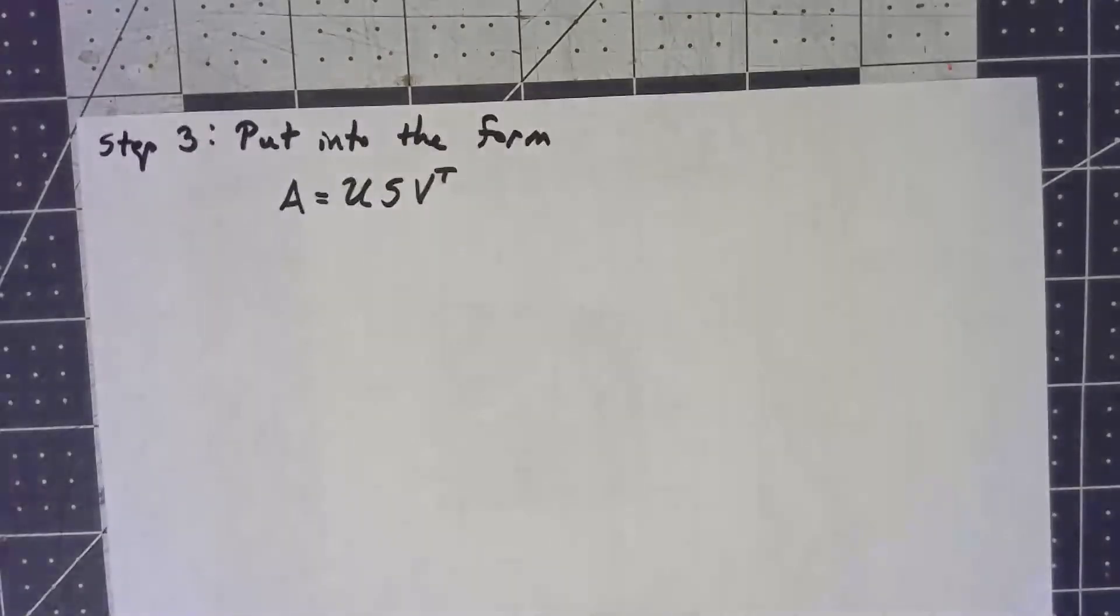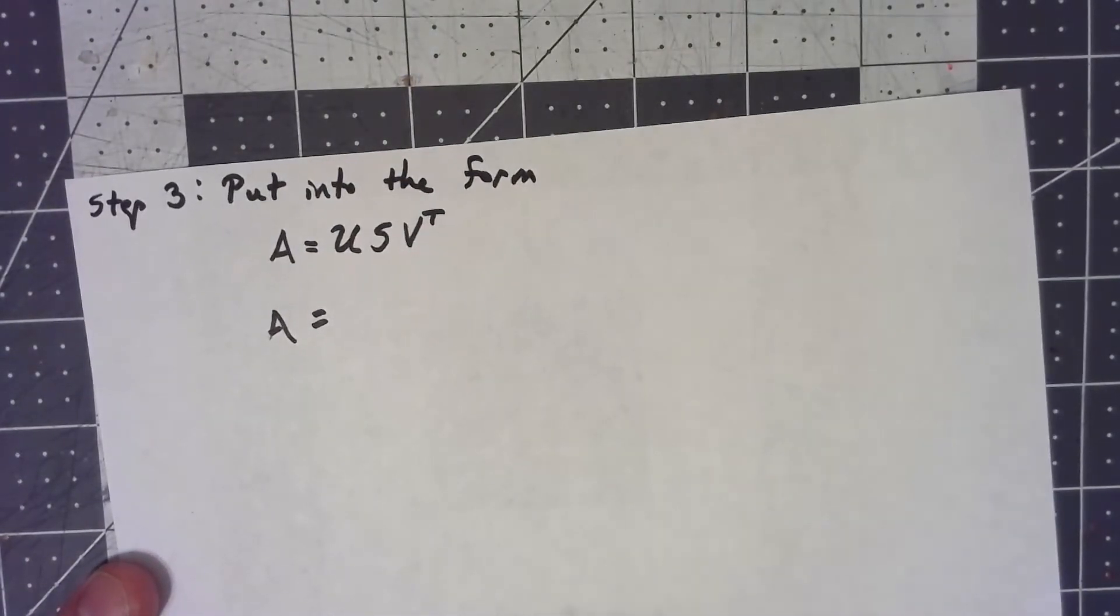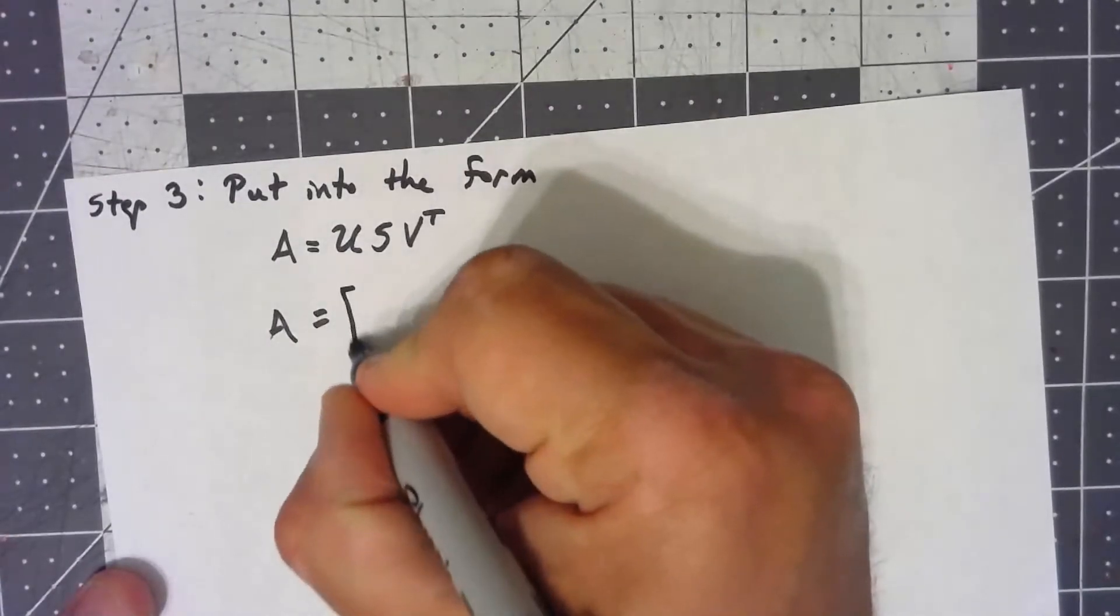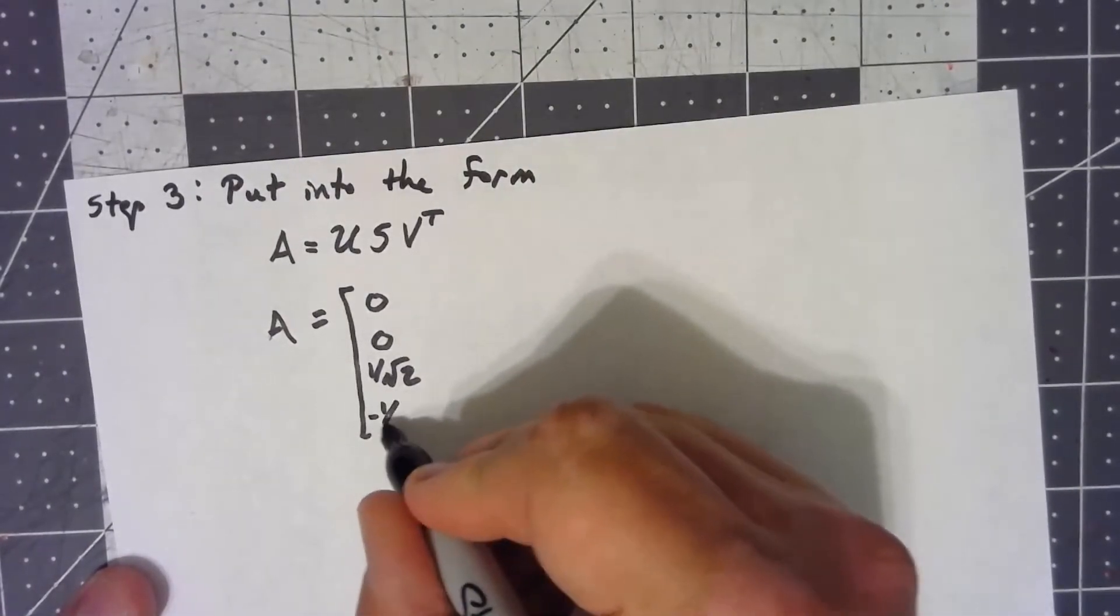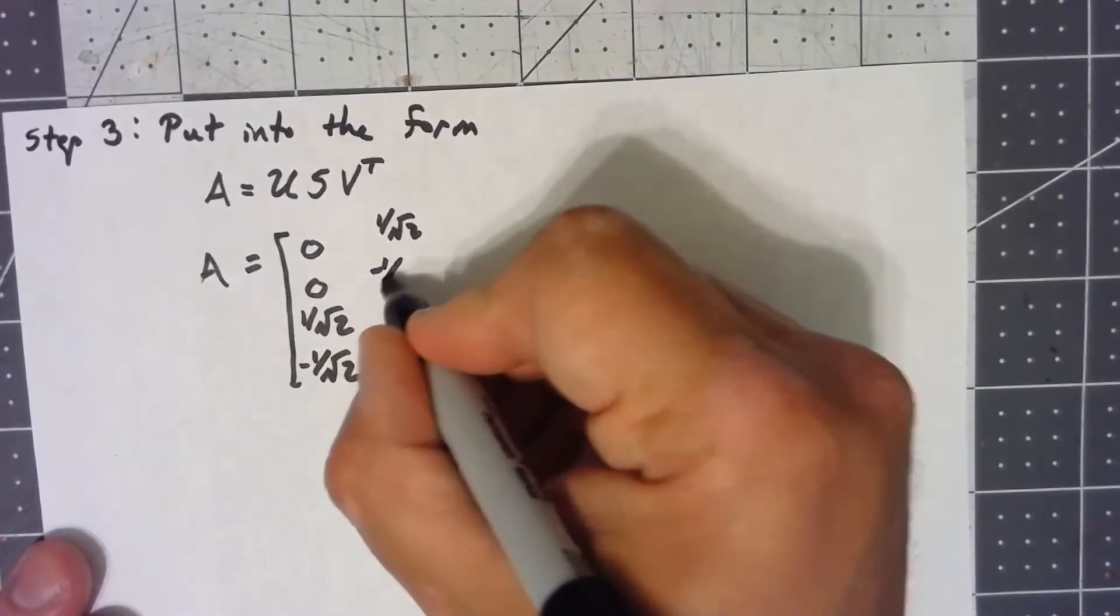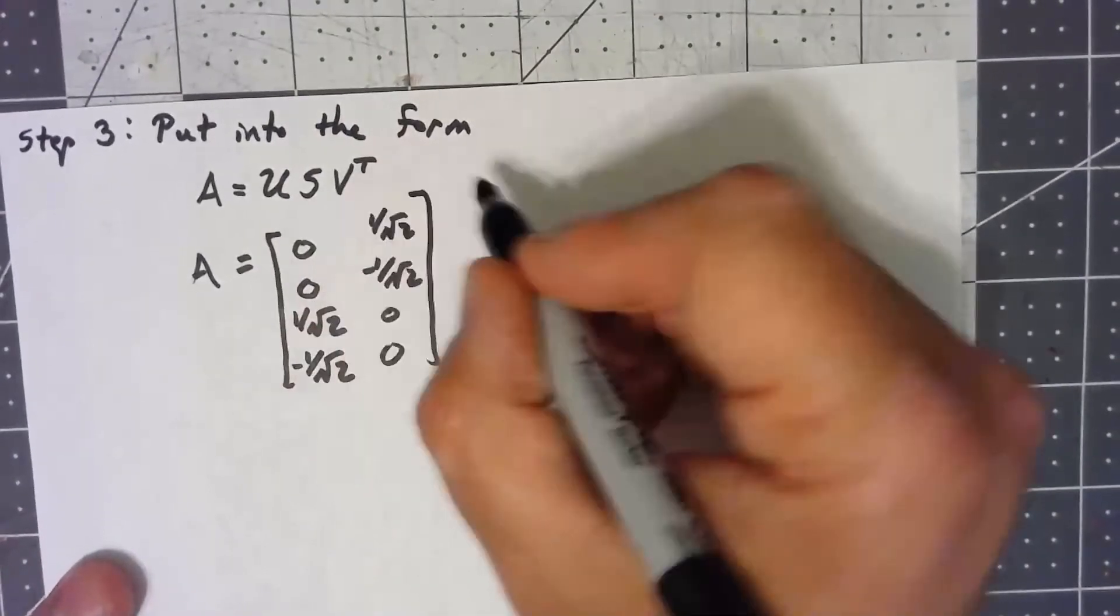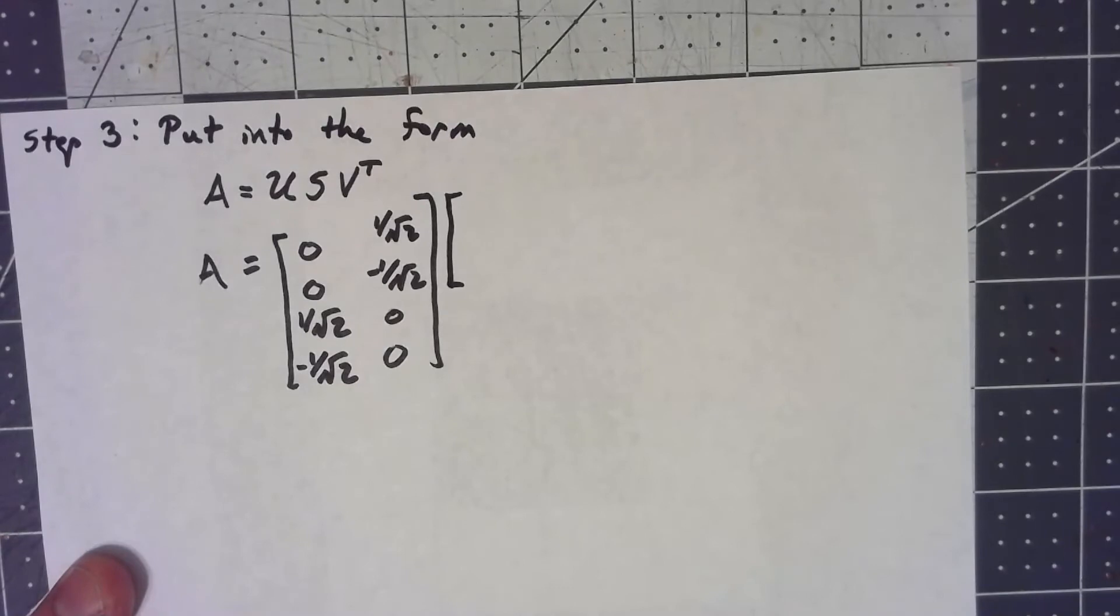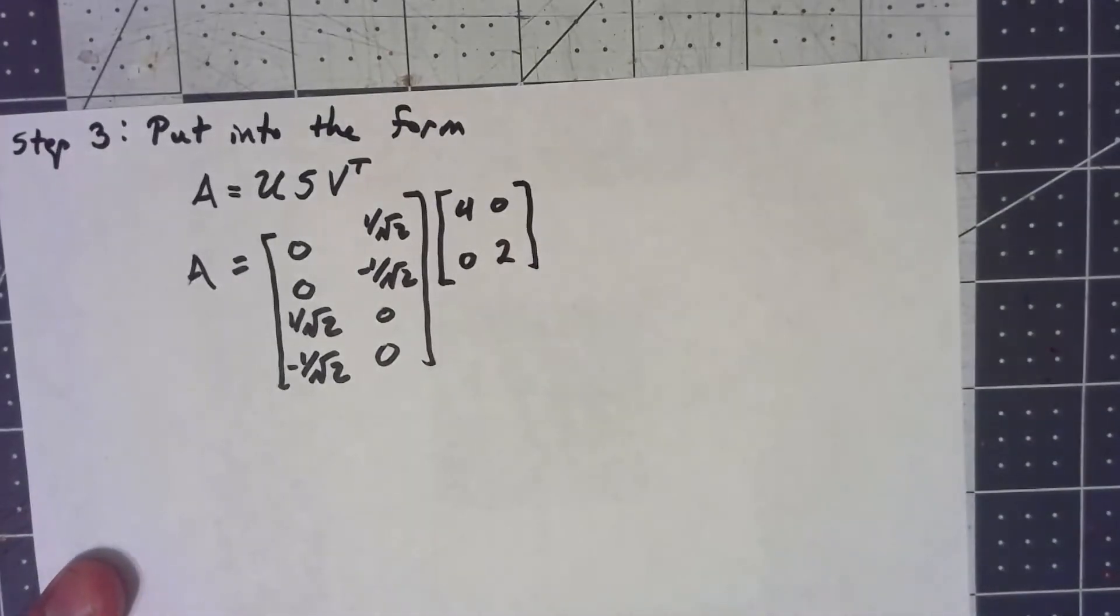Now, to some extent, that's it, but we do tend to, as I said at the beginning, write this as a factored form for A. So my matrix A is my u vectors put into a matrix. My S is a diagonal matrix of my singular values. So I've got the 4, 2, 0, 0. And then v transpose. So v transpose is going to have my v vectors as my rows.